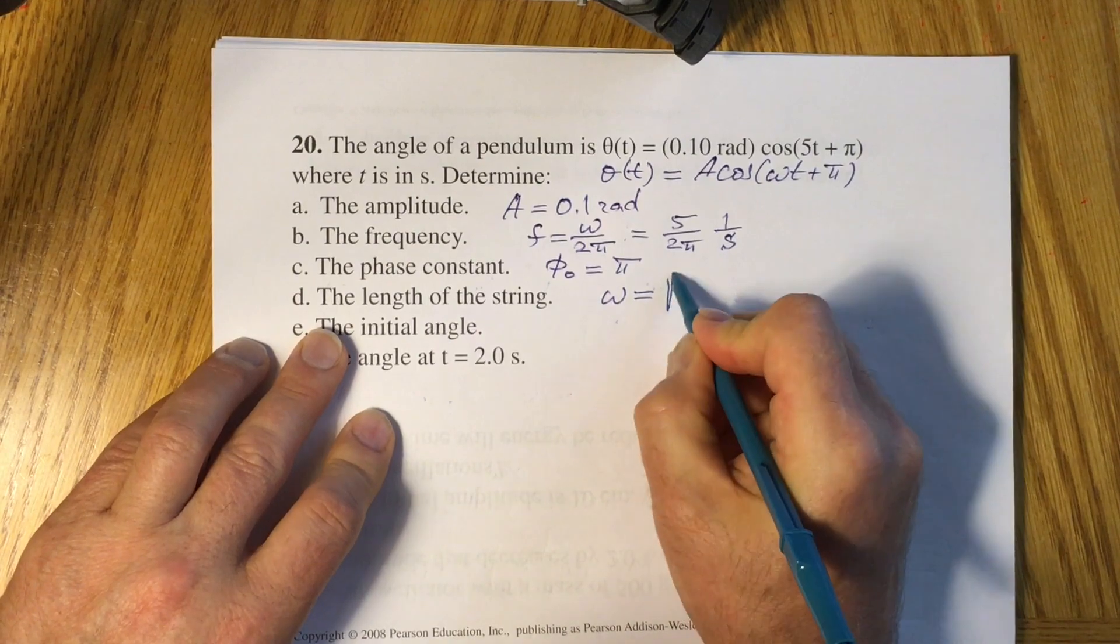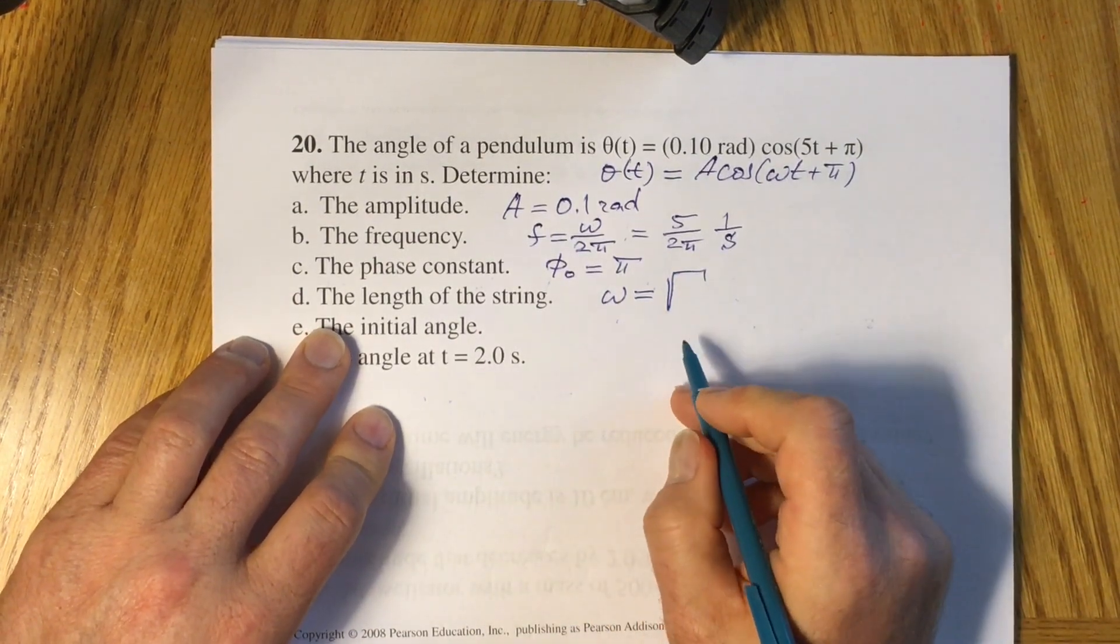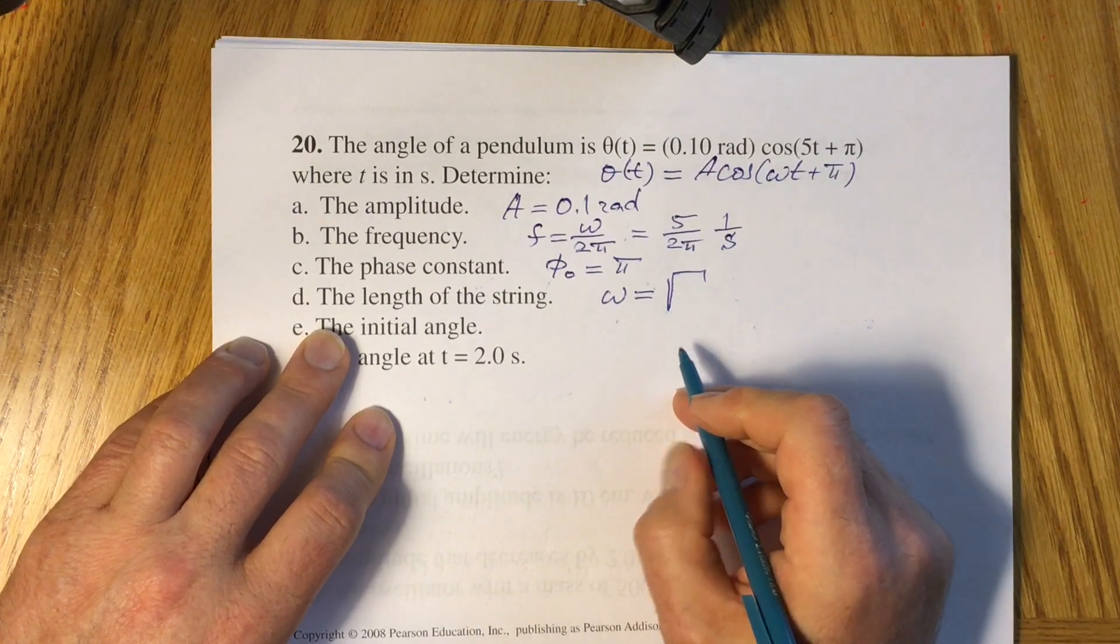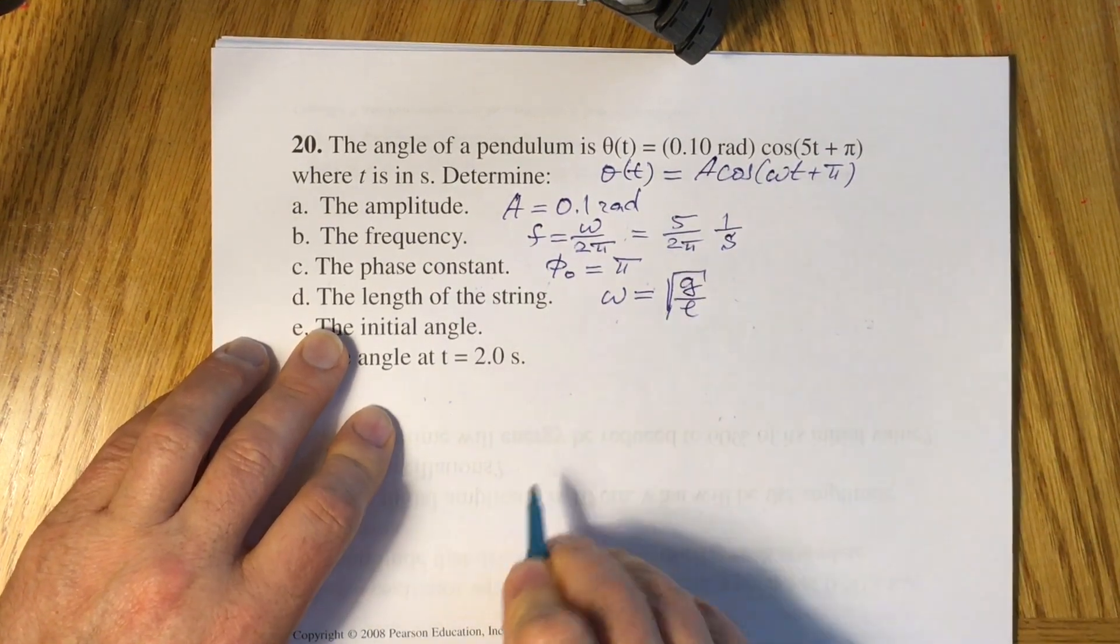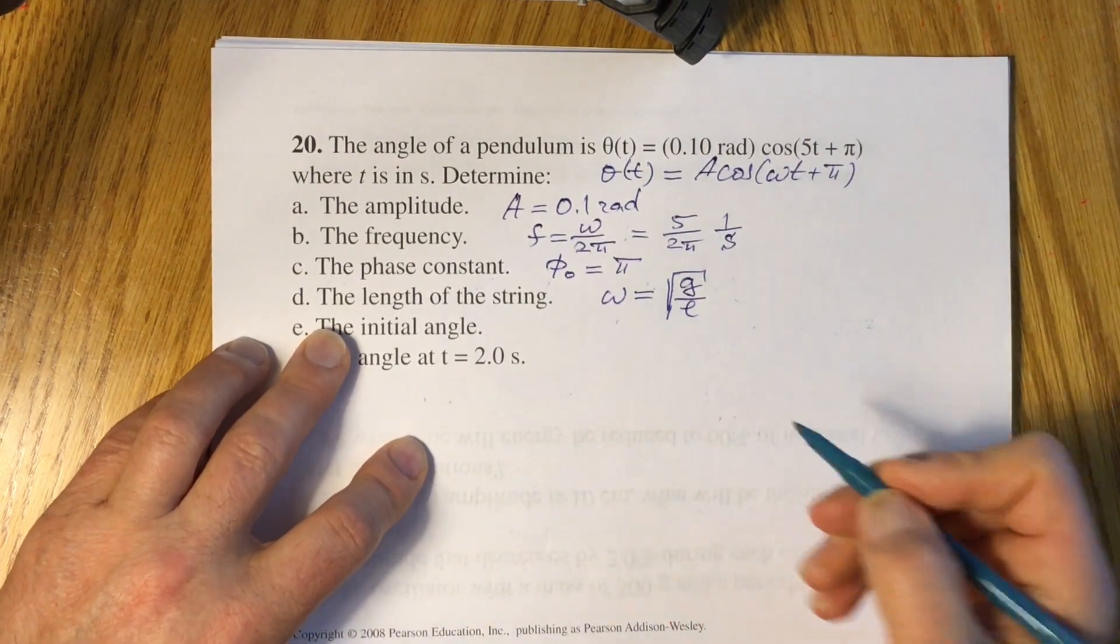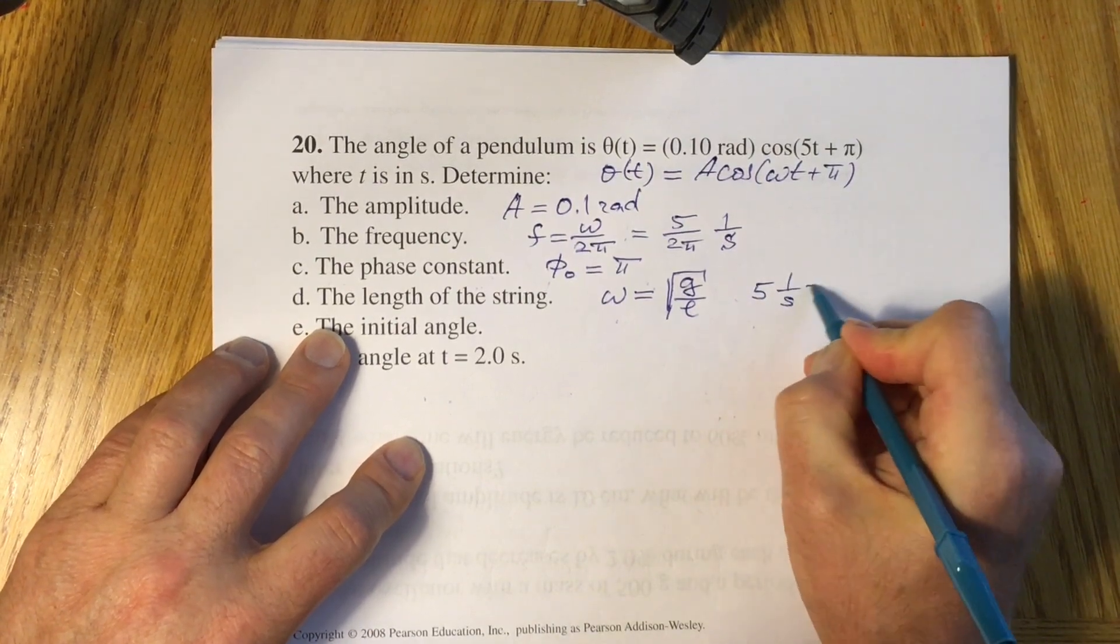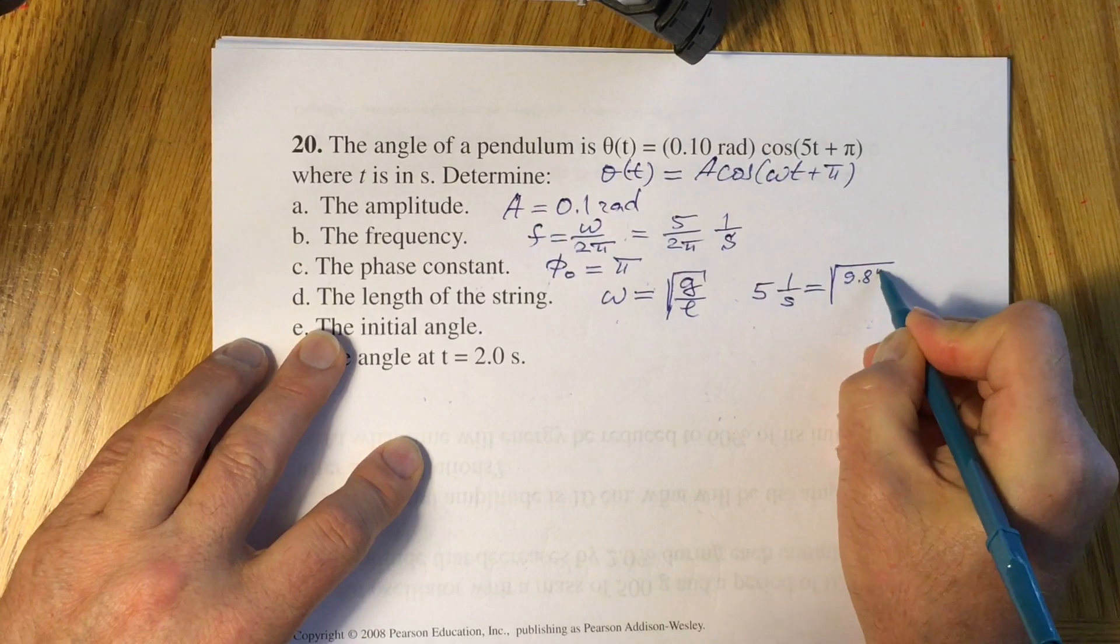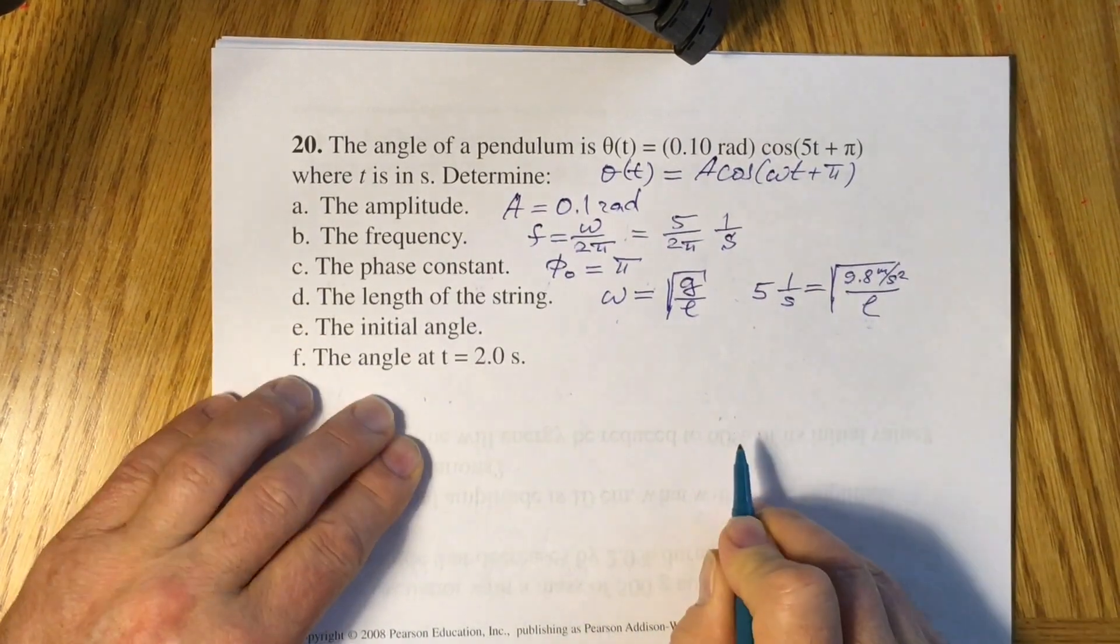You have to use your condition for the omega. Omega is equal, if you remember, it will be square root of g divided by L, length of the string. So we have that our 5, 1 over second, equals square root of 9.8 meter per second squared divided by the length of the string L.